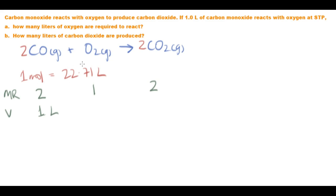What's the ratio of carbon monoxide to oxygen? It's two to one. We know that one is half of two. So if one is half of two, and there's one liter of carbon monoxide, then there must be half a liter of oxygen.